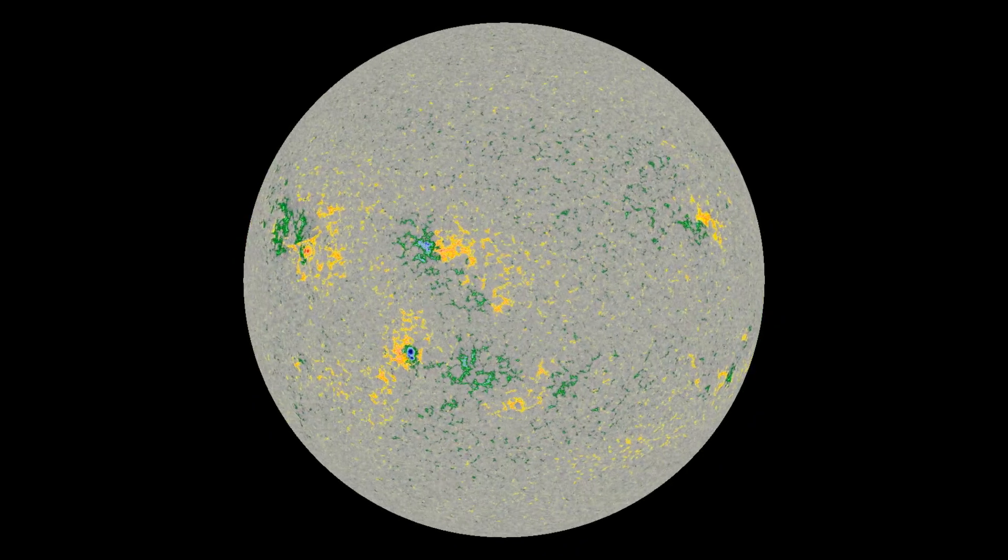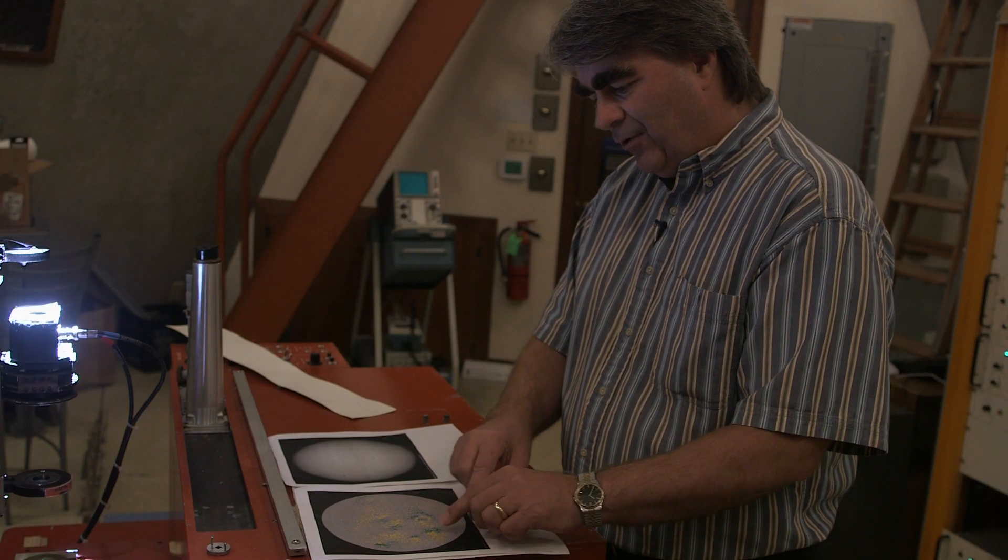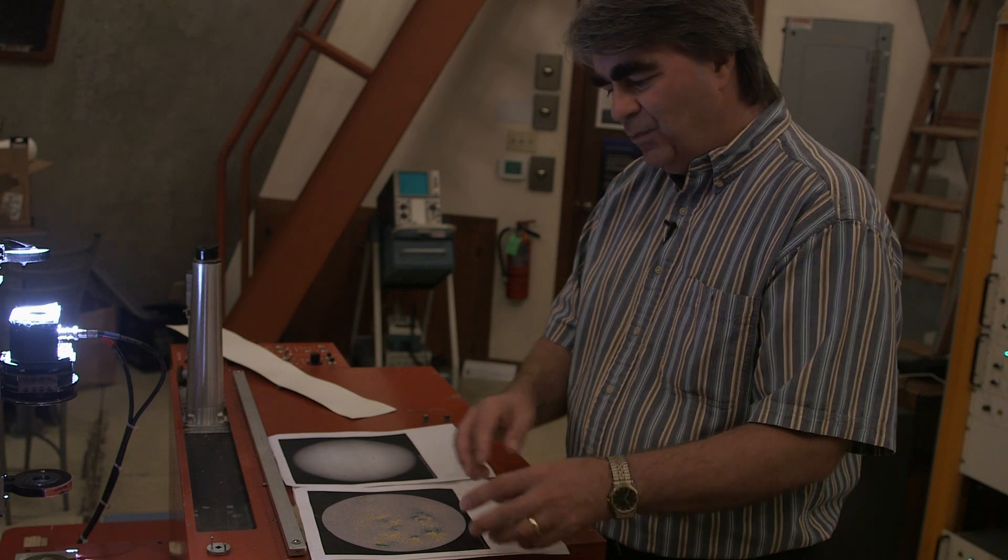Sunspots have a magnetic direction. And so what happens is you see these large structures that appear at mid-latitudes and low latitudes. And gradually over time, they diffuse and they move poleward.